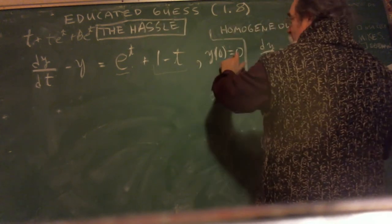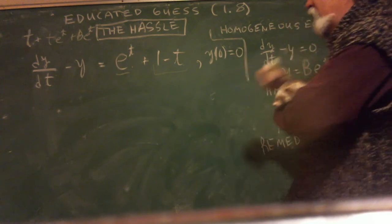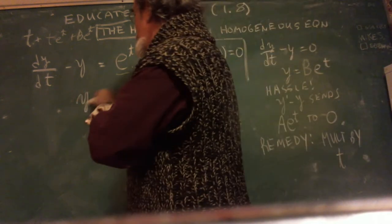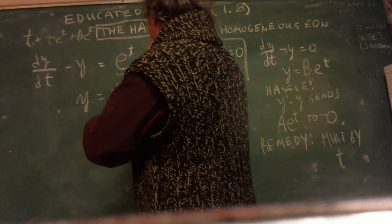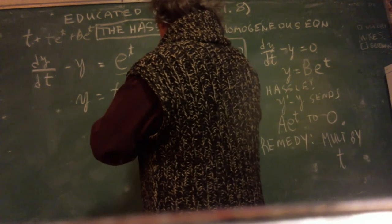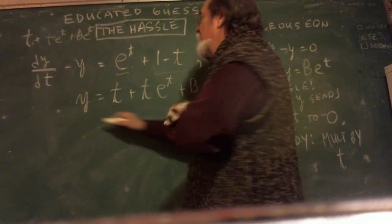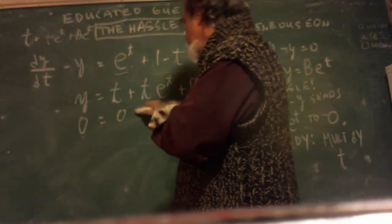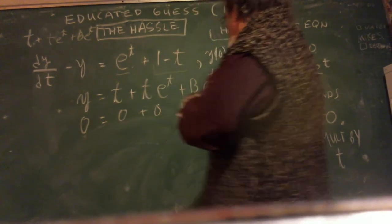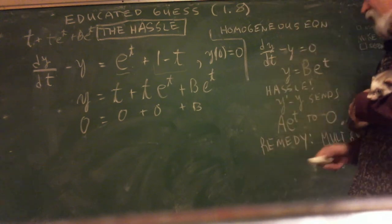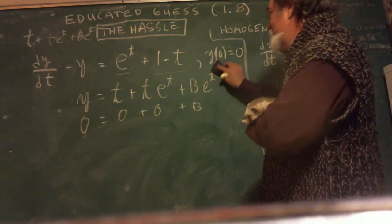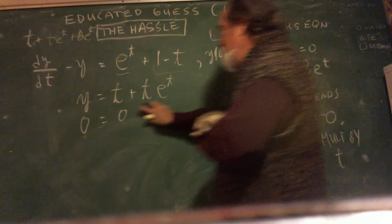Oh, I didn't do the y of zero yet. Let's do the particular. Let's do the initial condition. Okay. So I have y equals t plus t·e^t plus b·e^t. And y of zero equals zero. So b is zero. Oh my goodness. So my y is just this. Whee!